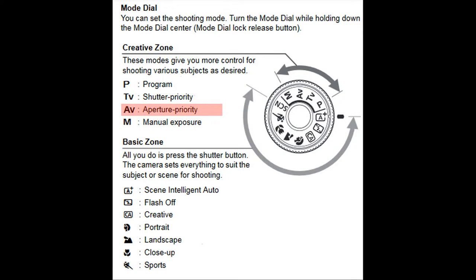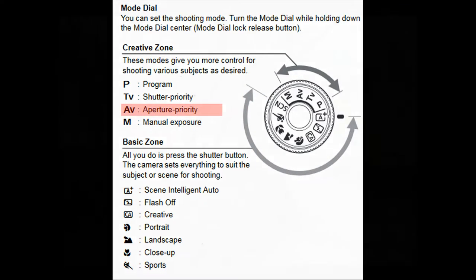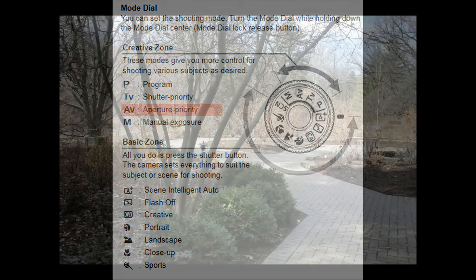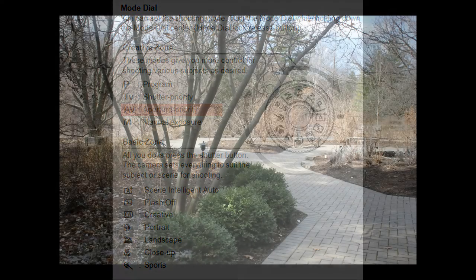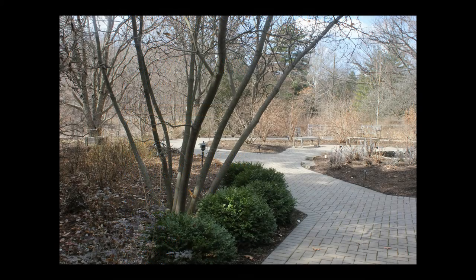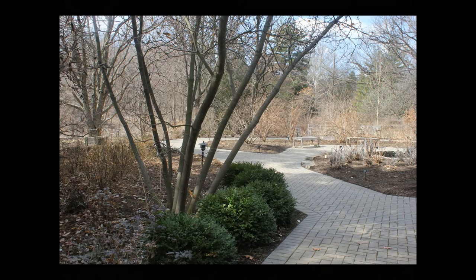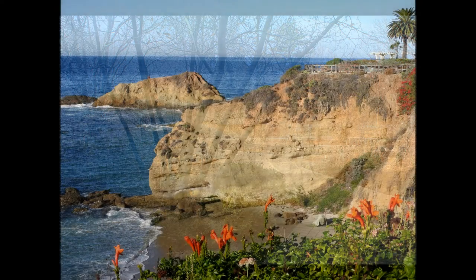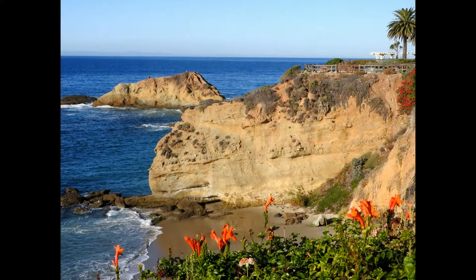The last four images were shot in aperture priority exposure mode, selected by dialing to AV for Canon or A for Nikon. In aperture priority, you choose the aperture, and the camera matches it with an appropriate shutter speed. Larger aperture numbers produce increased depth of field, which is critical for landscape photographs.